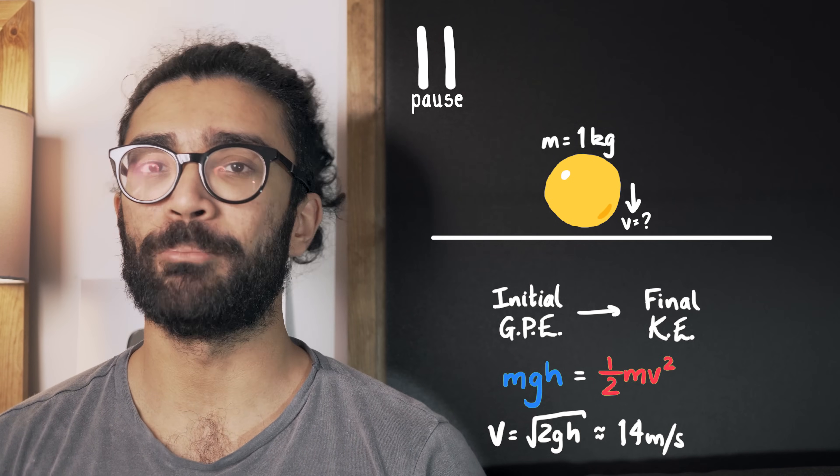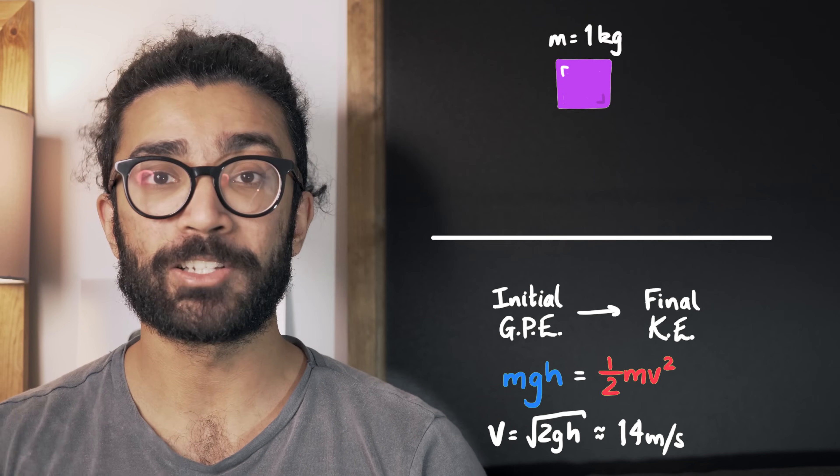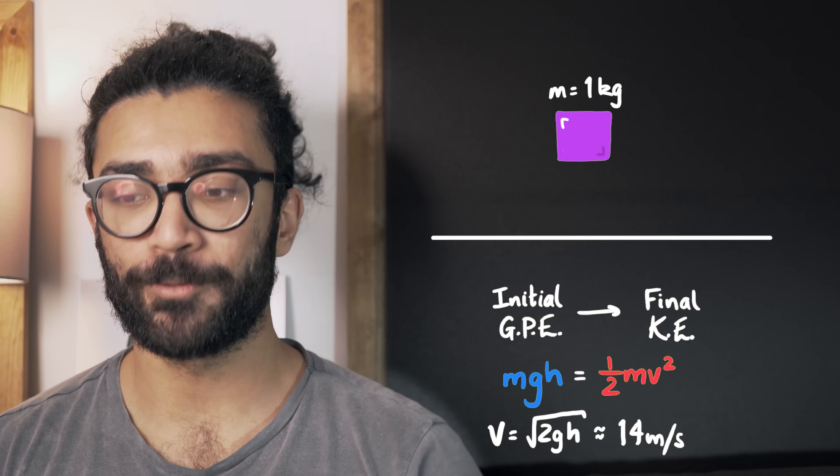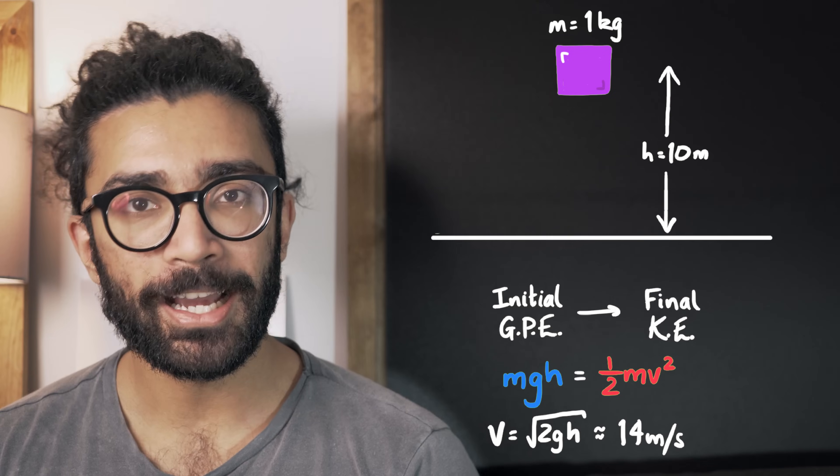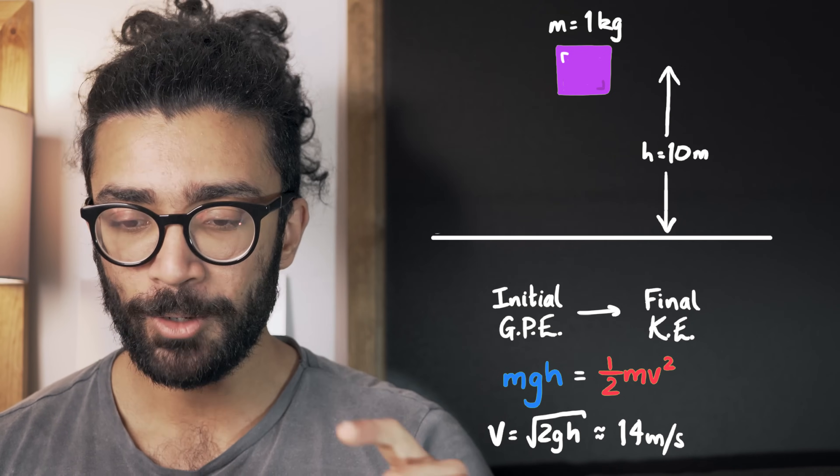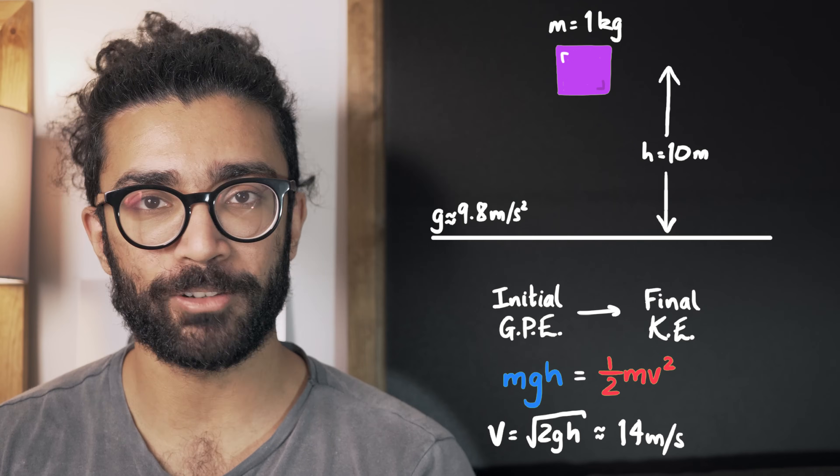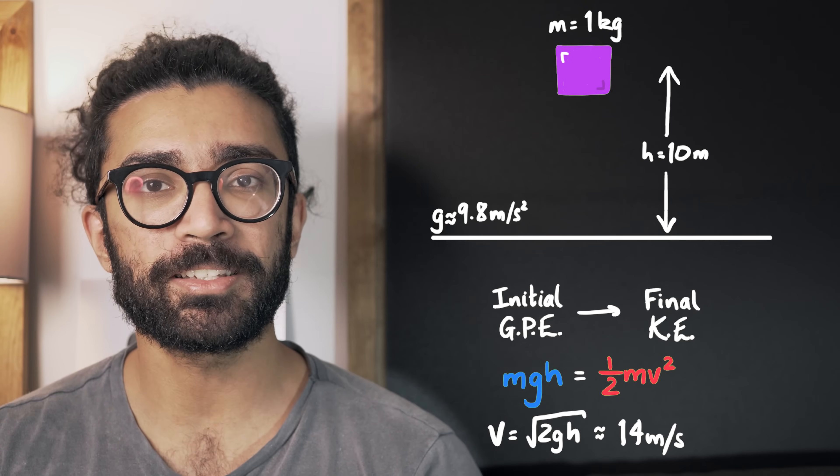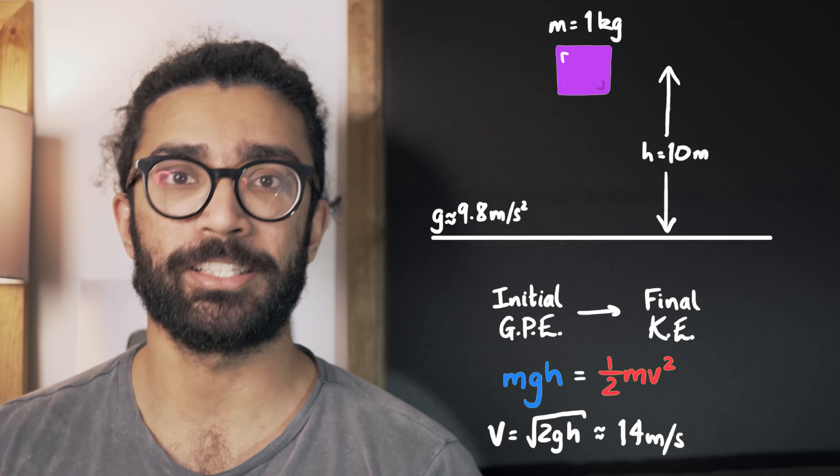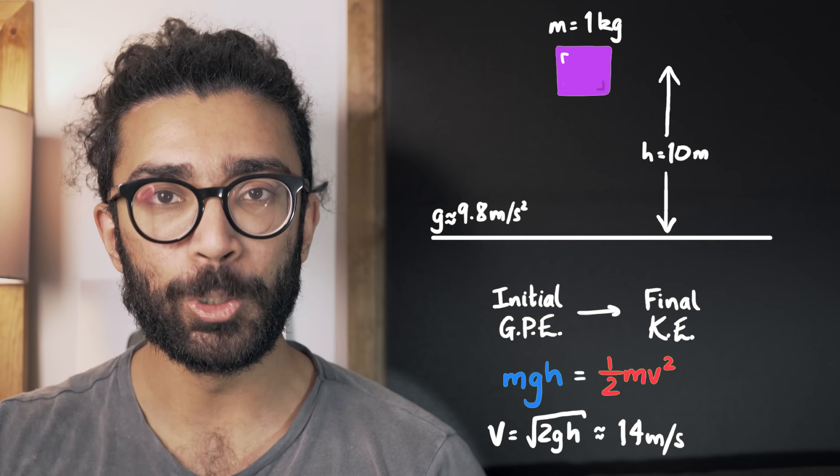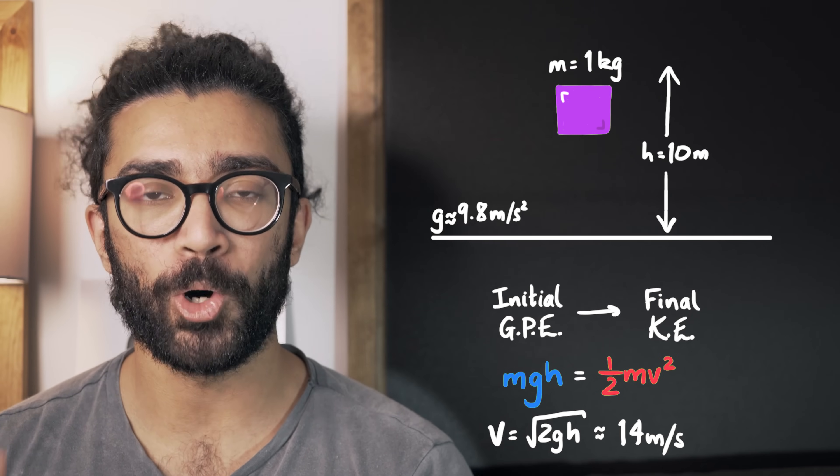It doesn't matter if it's a 1 kilogram ball or if it's something else. As long as we're using the correct values for the mass of the object, the height above the surface of the Earth, we're maybe ignoring or even accounting for air resistance, and we know the strength of the gravitational field, we can consistently calculate the amount of potential energy it has and what impact losing this potential energy will have on the object.